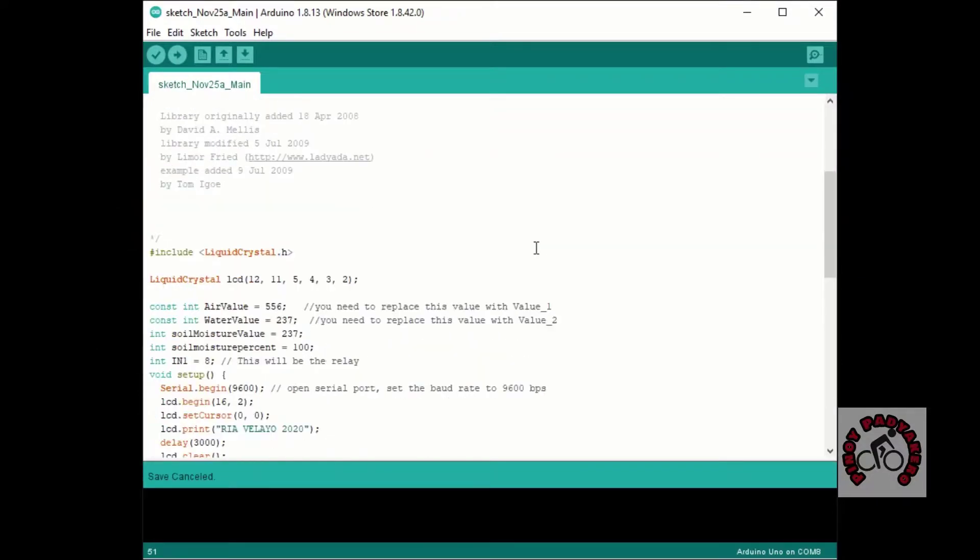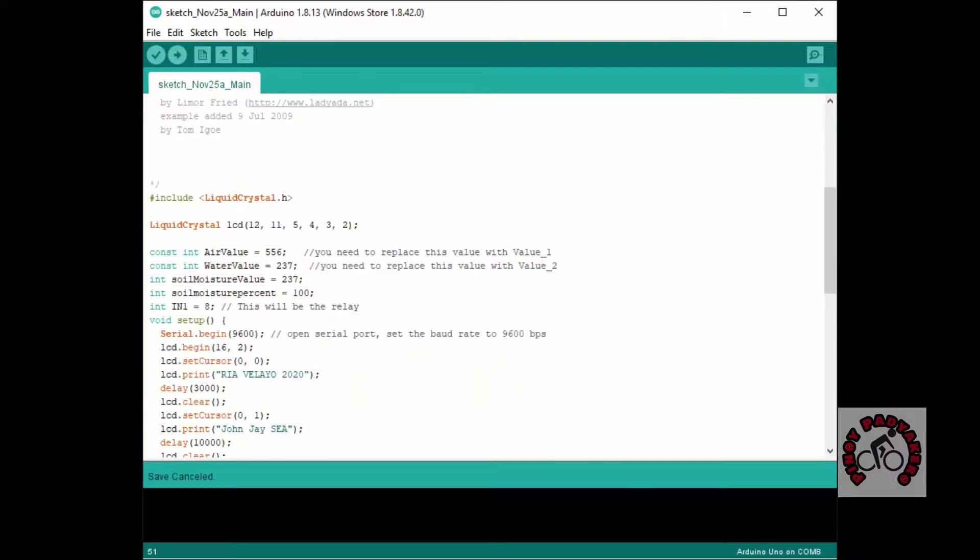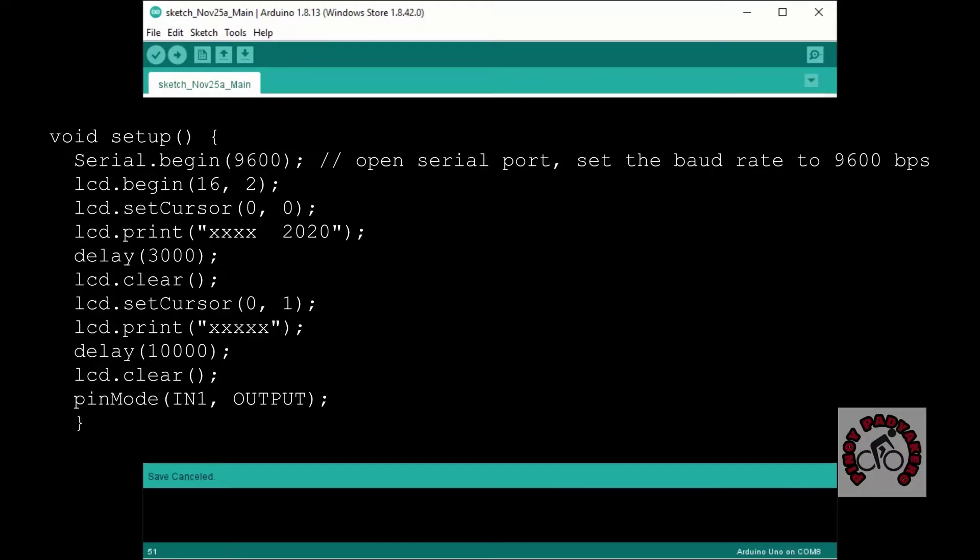The second part of the program is done by filling out the void setup part by opening up the serial port, displaying some text, and setting pin 8 as an output to drive the relay.